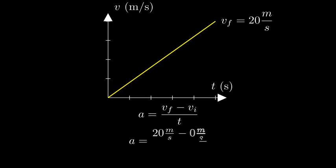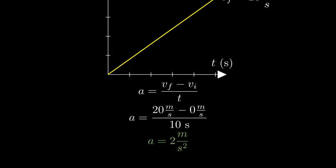Plugging in our values: 20 meters per second minus zero meters per second divided by 10 seconds. This gives us an acceleration of 2 meters per second squared.